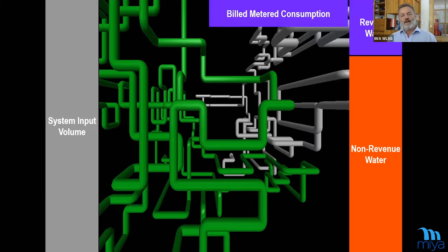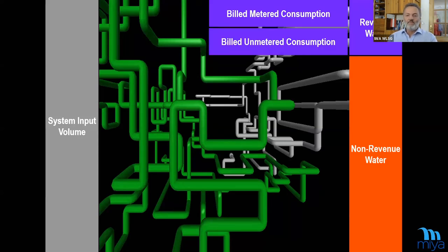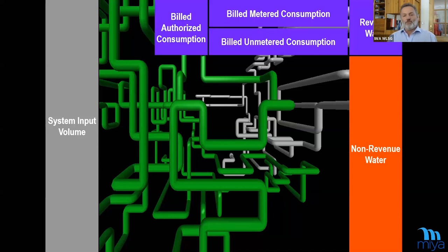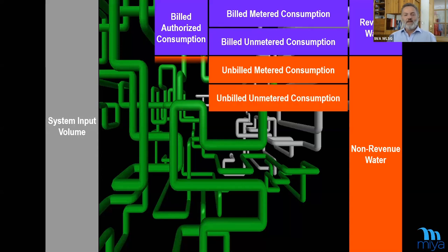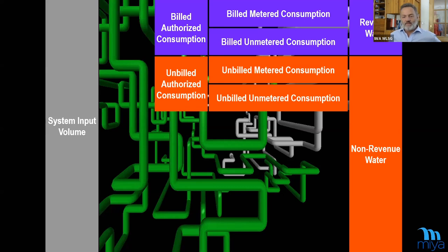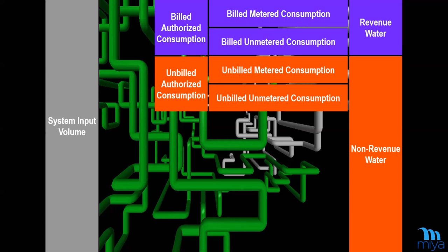Revenue water could be either billed metered consumption or unmetered consumption — all of this is billed authorized consumption. But then we also have unbilled consumption, which is also authorized, and this consumption can be either metered or unmetered. The trouble is this unbilled authorized consumption is already part of non-revenue water. People are allowed to use this water but we don't get revenues for it. A good example for unbilled unmetered consumption is, for example, firefighting. What if mosques get water for free? This can be either metered or unmetered, but definitely it is authorized consumption and part of my non-revenue water.